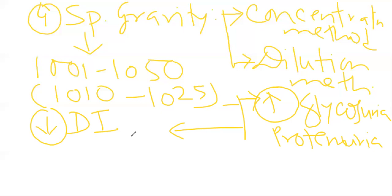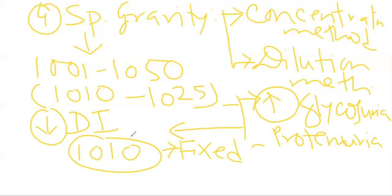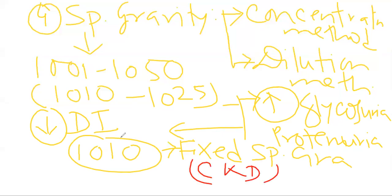If you get a specific gravity exactly of 1.010, it is known as fixed specific gravity. It has critical clinical importance — fixed specific gravity mainly can be seen in case of chronic kidney disease. This is the clinical importance of the fixed specific gravity.